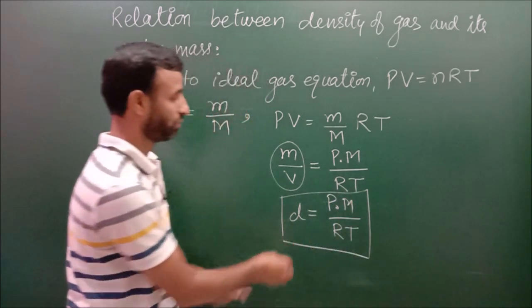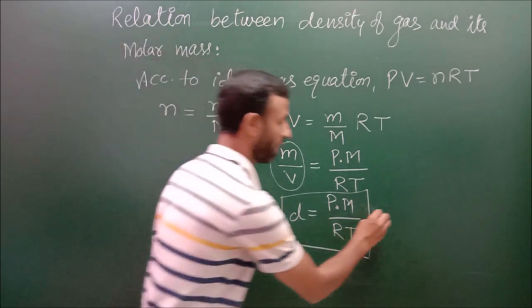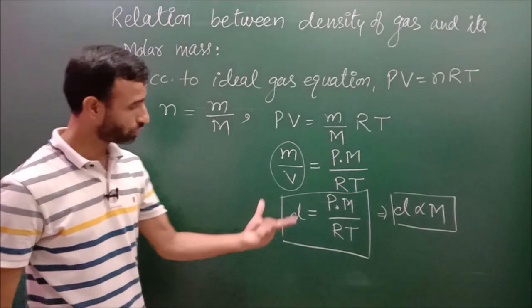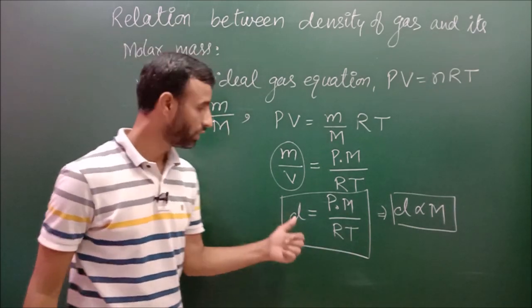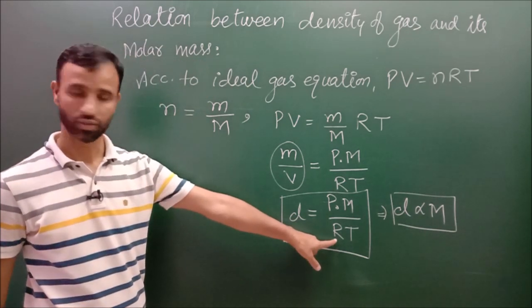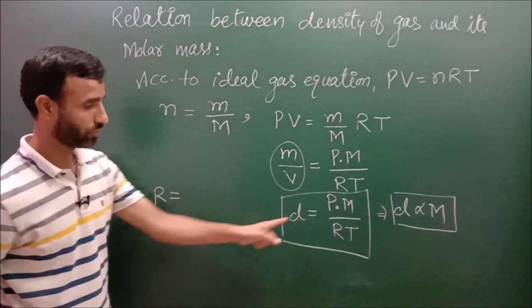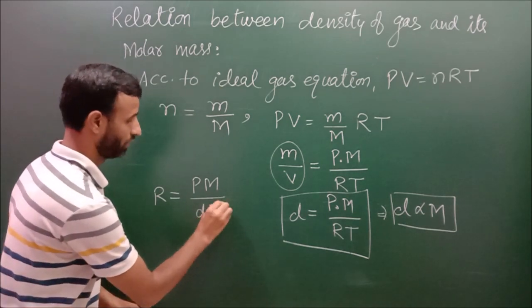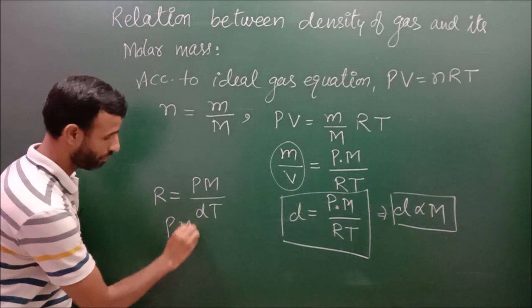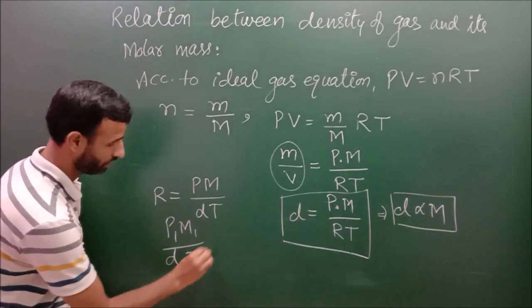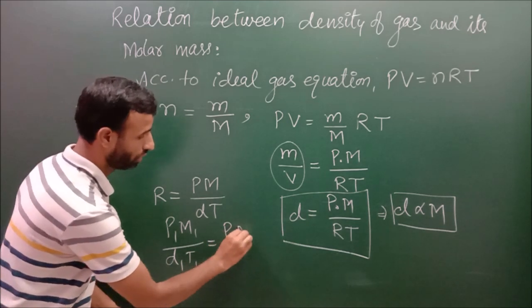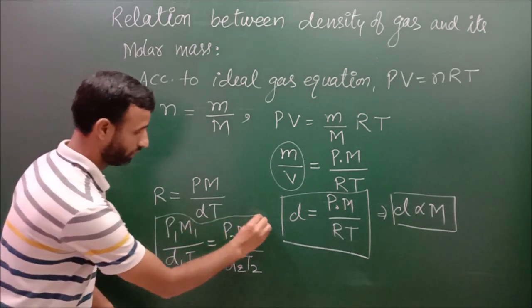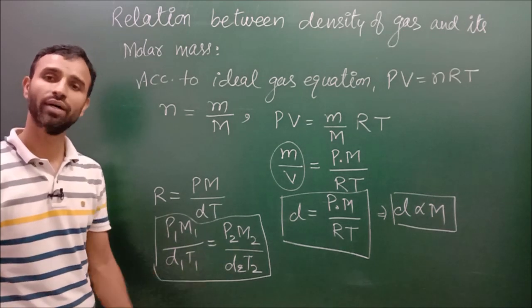So this is the relation between density and molar mass. That implies density is proportional to molar mass. And to derive the equation for the numericals, you know, here R is constant, so R is equal to Pm by dT. So it means P1M1 over D1T1 is equal to P2M2 by D2T2.